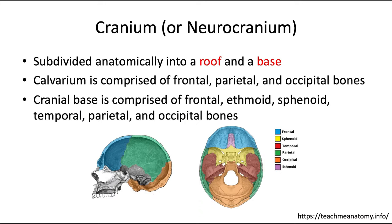Let's talk more about the cranium, also called the neurocranium. This can be further subdivided anatomically into a roof and a base. The roof protects the brain from above and the cranial base supports the brain from below.